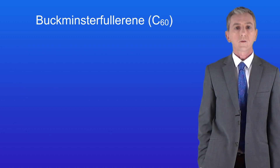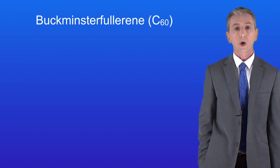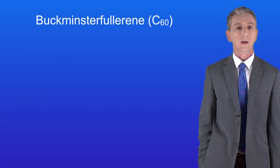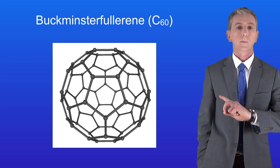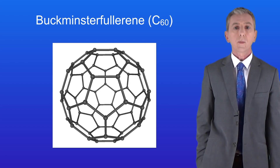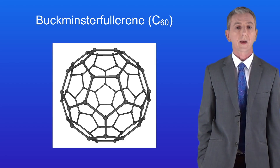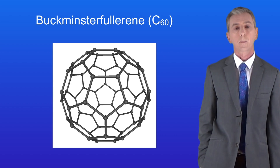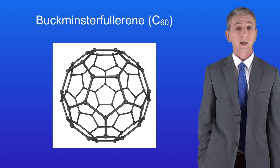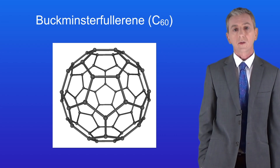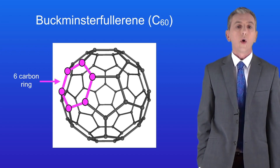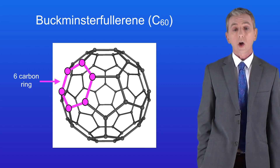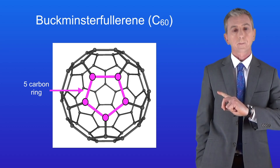The first fullerene molecule to be discovered is called Buckminsterfullerene, shown here. Buckminsterfullerene contains 60 carbon atoms arranged in a hollow sphere. The carbon atoms form rings with either six carbon atoms or with five carbon atoms.